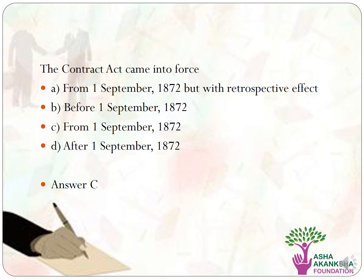The Contract Act came into force in which year? Options are: A) from 1st September 1872 but with retrospective effect, B) before 1st September 1872, C) from 1st September 1872, D) after 1st September 1872. The correct answer is option C, that is from 1st September 1872.